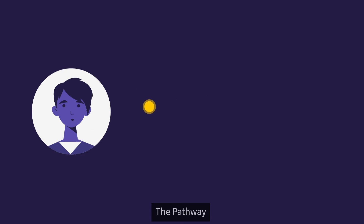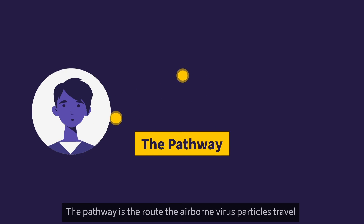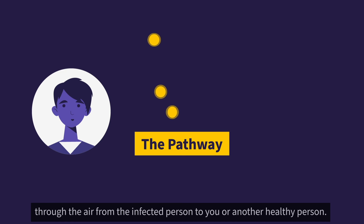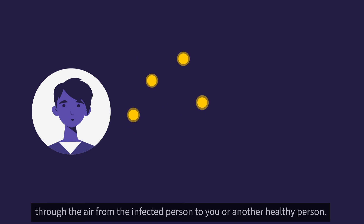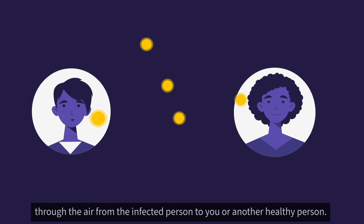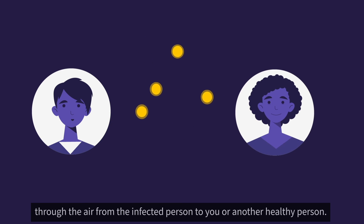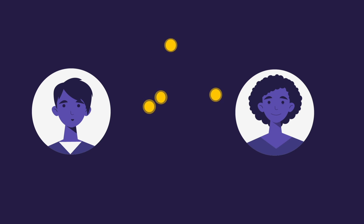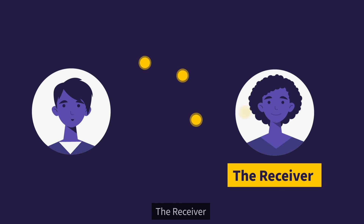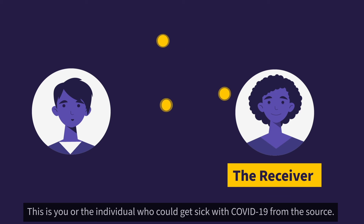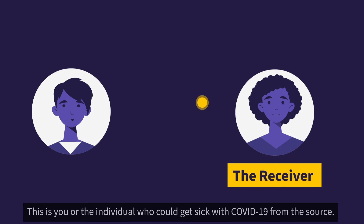The pathway is the route the airborne virus particles travel through the air from the infected person to you or another healthy person. The receiver is you or the individual who could get sick with COVID-19 from the source.